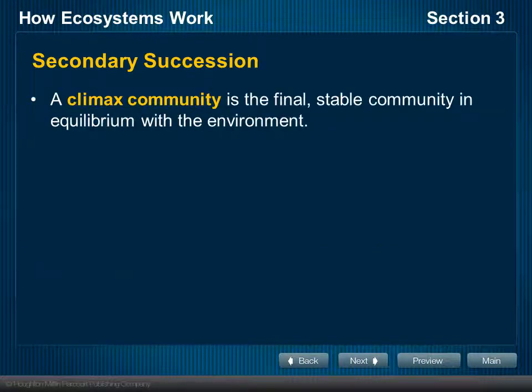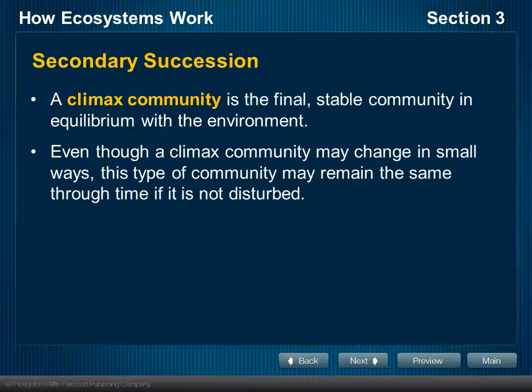As secondary succession continues, it moves toward what we call the climax community — the final stable community in equilibrium with the environment. Even though ecosystems are dynamic and not static, they are working toward a point where everything is in equilibrium. Whatever that community is at that point of climax or equilibrium, that's the climax community. There will still be lots of daily minor changes — equilibrium means balance where one end goes up and the other goes down, a dynamic balance. But generally, that ecosystem will remain the same for an undetermined amount of time unless disturbed.